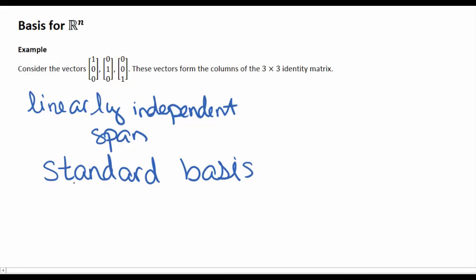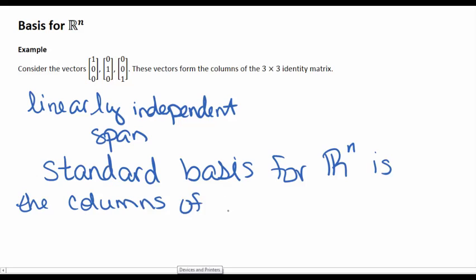And we can expand this to R^n. So in general, the standard basis for R^n is the columns of the n by n identity.